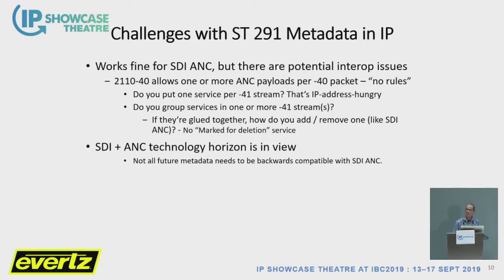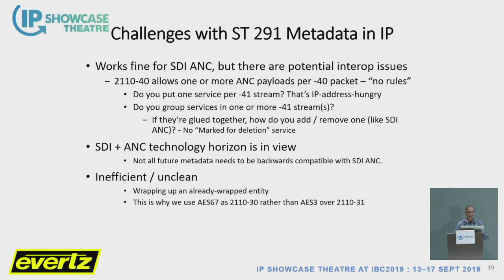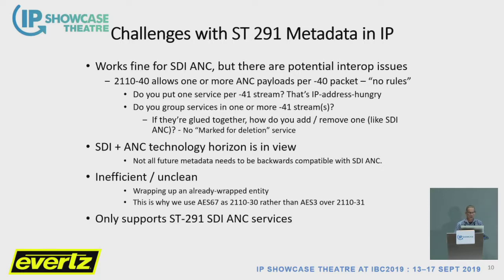Also, the technology horizon is in view — this is another motivator. SDI is going away, so we don't want to build new metadata on the old technology. We don't need backwards compatibility with future metadata that will never go back into an SDI system. It's also inefficient to double-wrap something for transport — we're doing it because it gives us an excellent path of transition. It's also why we use AES67 instead of simply using 2110-31 to transport AES3. The worst part about ST291 is it only supports ST291 ancillary services — simple, small-scale services — and it consumes one or more IP addresses per stream. We'd like to preserve IP addresses wherever we can.